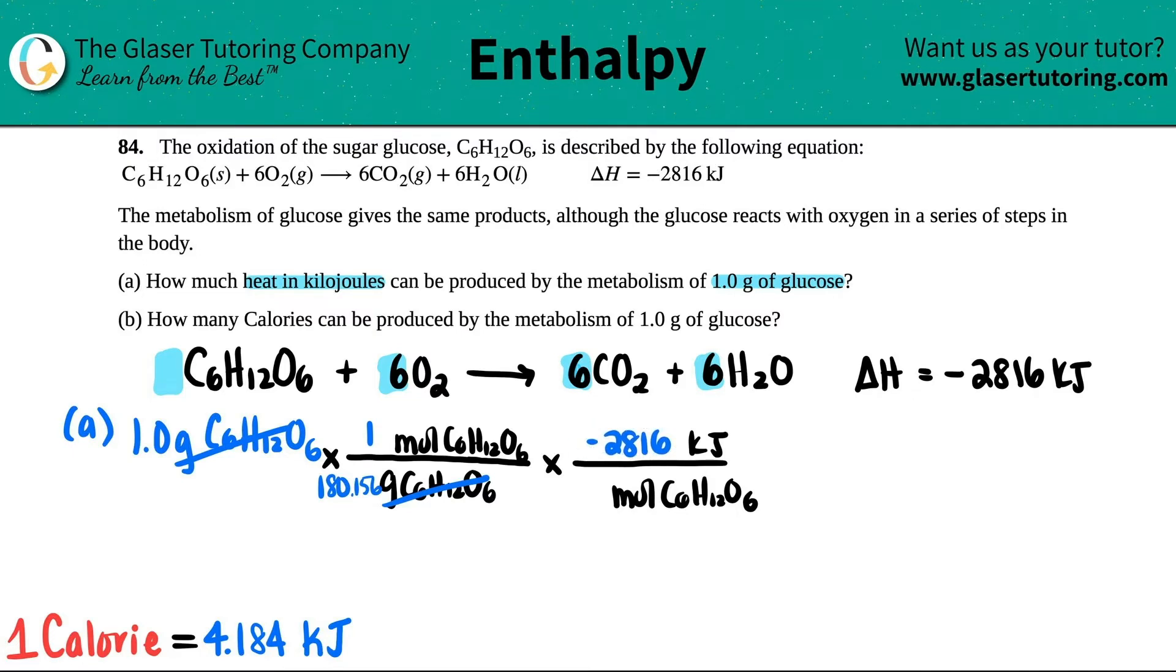This is equivalent to, what's the number in front of the C6H12O6? Just a 1. So I just put a 1 down here. Cancel these out, and now we come to our destination. So it basically is just 2,816 divided by 180.156.